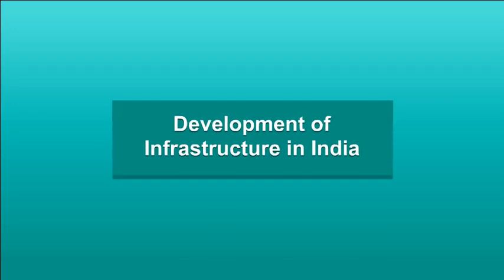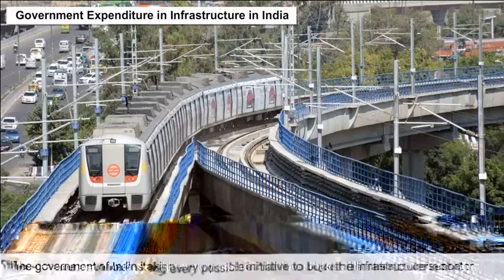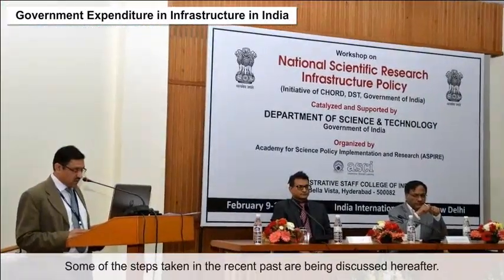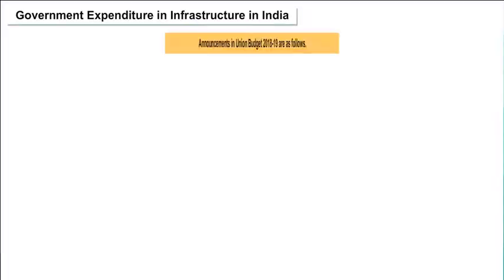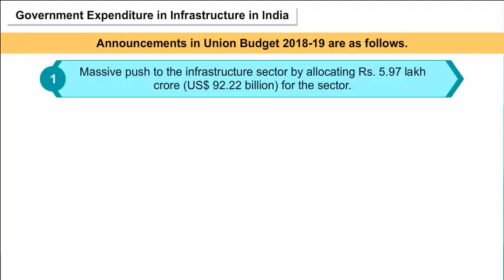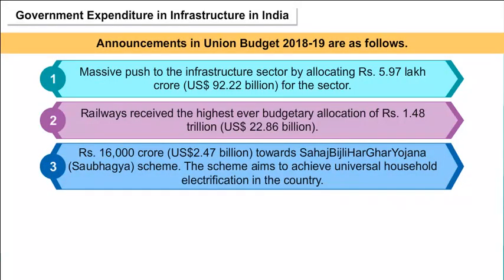Development of Infrastructure in India — Government Expenditure. The Government of India is taking every possible initiative to boost the infrastructure sector. Announcements in Union Budget 2018-19 include a massive push to the infrastructure sector by allocating Rs. 5.97 lakh crores (Rs. 92.22 billion). Railways received the highest ever budgetary allocation of Rs. 1.48 trillion (Rs. 22.86 billion), and Rs. 16,000 crores (Rs. 2.47 billion) towards the Sahaj Bijali Har Ghar Yojana — Saubhagya Scheme.